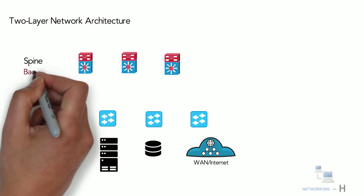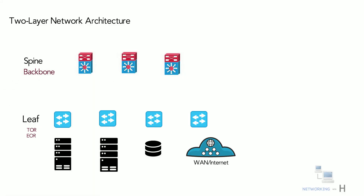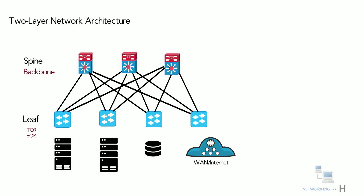The spine layer is the backbone of the network and is responsible for interconnecting all leaf switches. In this two-tier architecture, every leaf switch is connected to each of the spine switches in a full mesh topology.